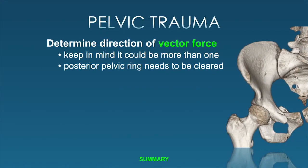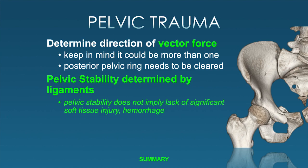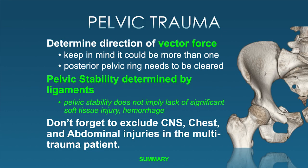In summary: determine the direction of the vector force and keep in mind it could be more than one. Really make sure you're looking at the posterior pelvic ring, because that's going to dictate whether you're dealing with an unstable situation. Remember, stability is going to be determined by the ligaments, not necessarily by the bone—but you'll see the displacement as a result of those ligaments being involved. Pelvic stability also does not imply a lack of significant soft tissue injury or hemorrhage. If your patient is reduced in a pelvic binder or sheet, you're going to be looking for more subtle injuries. Don't forget about excluding other major injuries and incorporating your imaging of the pelvis into your whole-body CTs.